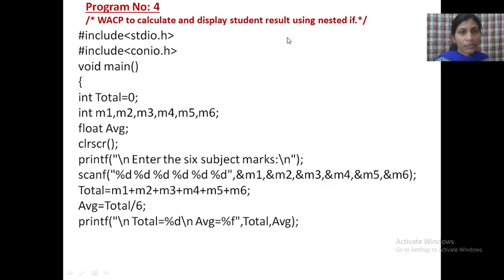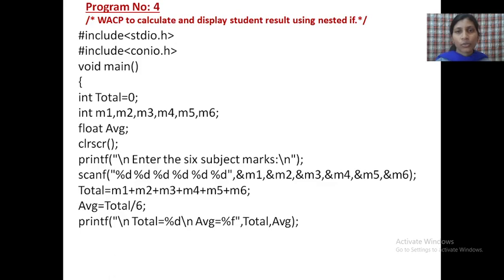In the previous video, we discussed the even and odd number program, where I used if conditions. There are a number of conditions: if condition, nested if condition, if-else ladder. In today's program, we will use nested if. What is the difference between if-else condition and nested if? In if-else condition, we use only one if condition. But in nested if, we will use more than two if conditions — a number of if conditions. So the name of this is nested if, and using that nested if, we will execute this fourth C program.